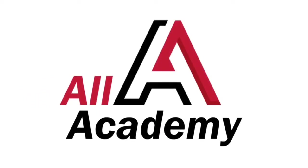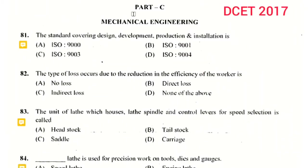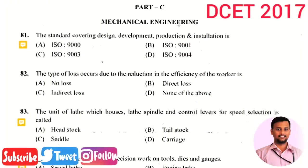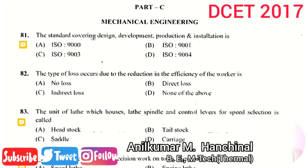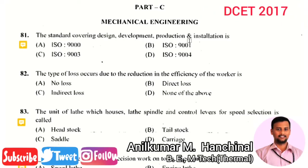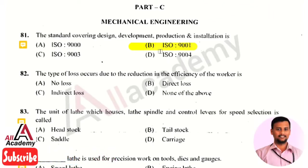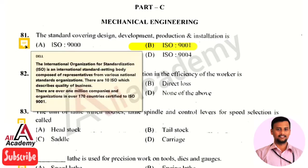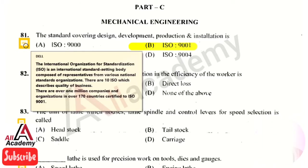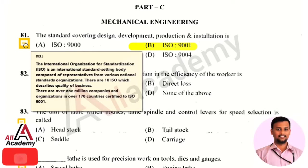The first question in Part C of the mechanical engineering stream: the standard covering design, development, production and installation — the right answer is option 2, that is ISO 9001. ISO stands for International Organization for Standardization, which provides a set of rules or guidelines to various companies to maintain quality of business.